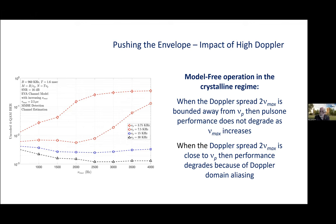So, we're going to vary the Doppler period, nu_p, by taking the number of delay bins to be B over nu_p, and the number of Doppler bins n to be T times nu_p. When the Doppler spread, which is twice nu_max, is bounded away from nu_p, performance doesn't degrade as nu_max increases.